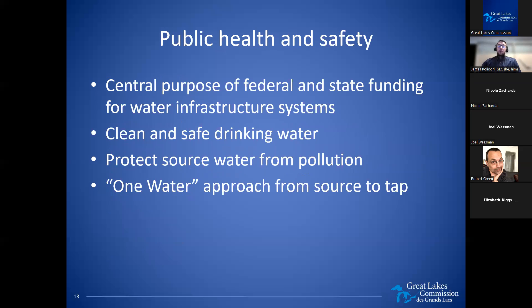The first priority area is public health and safety. The working group discussed that public health and safety is a central purpose of federal and state funding for water infrastructure systems, whether through the supply of safe drinking water, the collection or treatment of sewage, or the management of stormwater. This deals with supplying clean and safe drinking water, prioritizing funding for lead service line removal, as well as combined sewer system construction, protecting source water from pollution, expanding support for green infrastructure and nature-based solutions to managing stormwater in the face of changing climatic conditions, and advancing source water protection efforts from PFAS chemicals, harmful algal blooms, and other emerging contaminants.